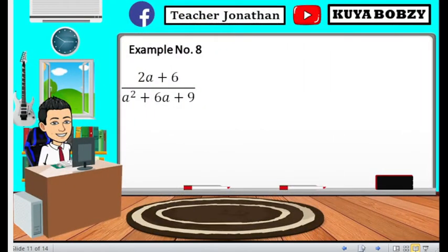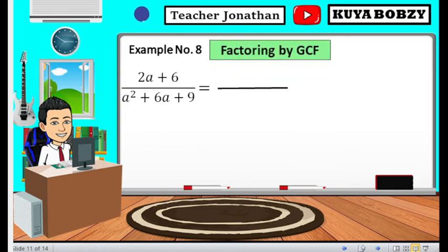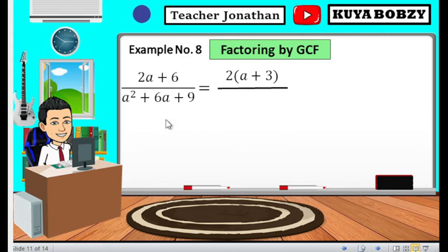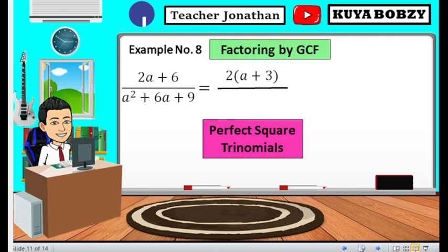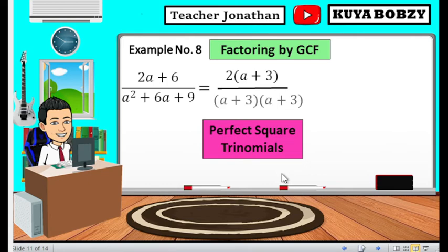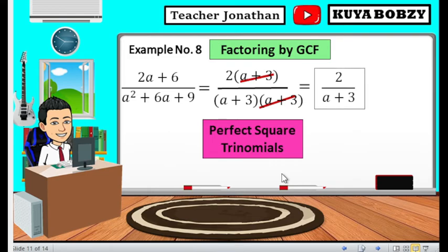Example number 8. We have 2a plus 6 all over a squared plus 6a plus 9. For the numerator, we use factoring by GCF of 2, giving 2 times a plus 3 — since 2a divided by 2 is a, and 6 divided by 2 is 3. For the denominator, this is an example of a perfect square trinomial. The factors for a squared plus 6a plus 9 are a plus 3 times a plus 3. We cancel out one a plus 3, leaving 2 over a plus 3 as the final answer.